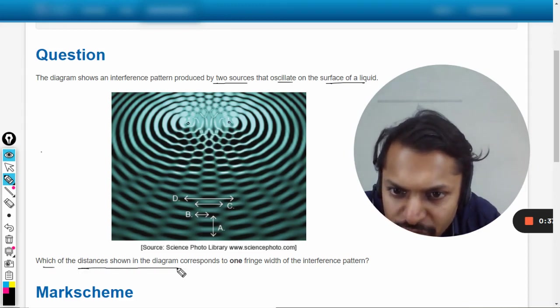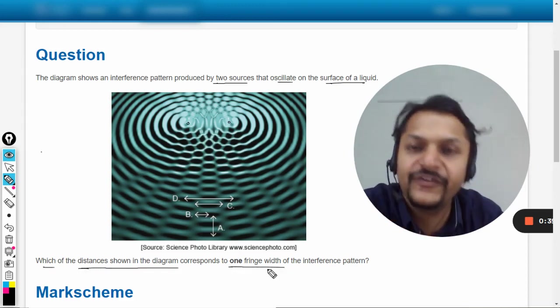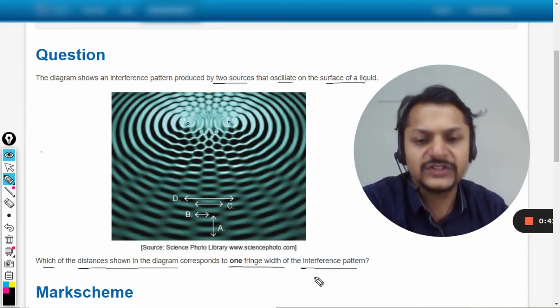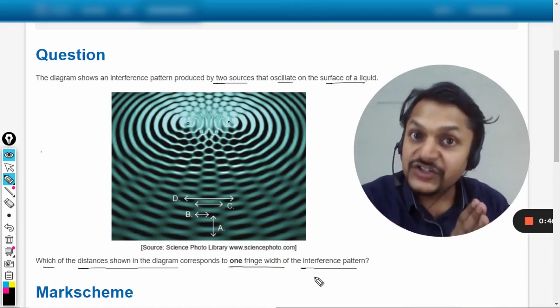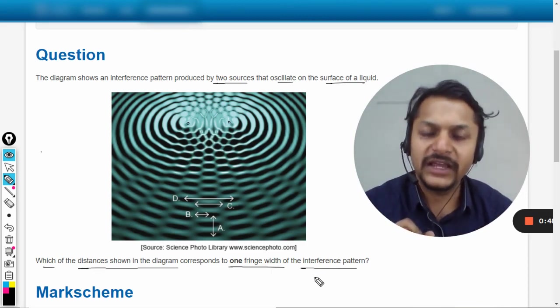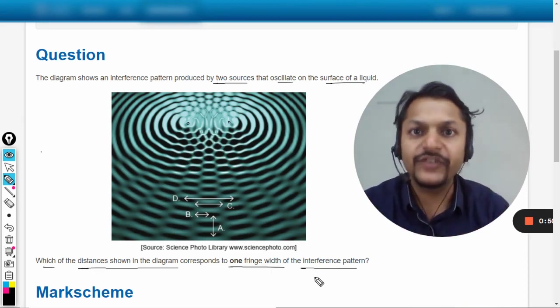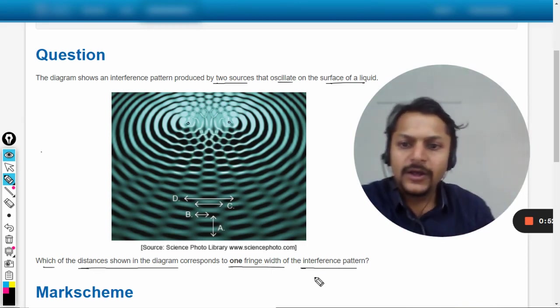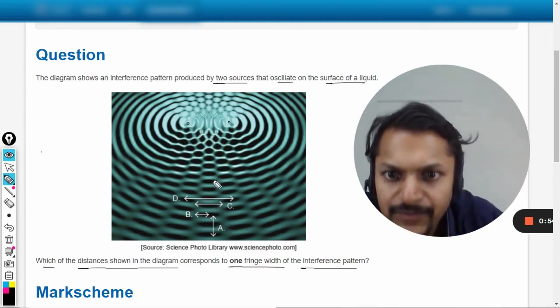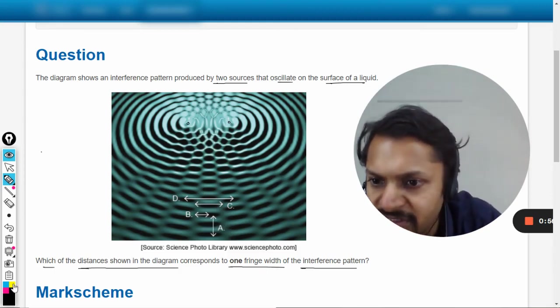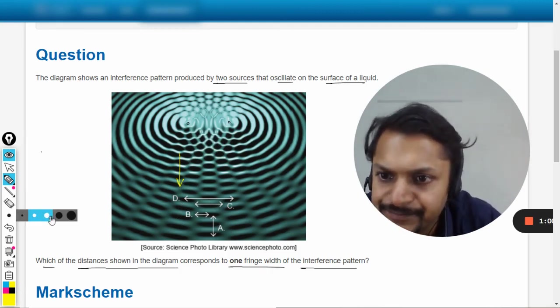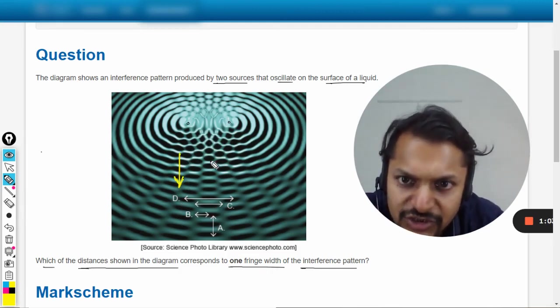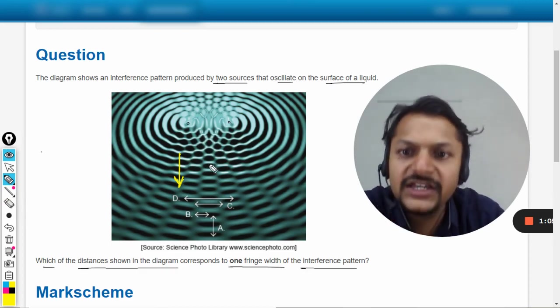Which of the distances shown in the diagram corresponds to one fringe width of the interference pattern? Either you call it fringe width or fringe spacing, it's the same thing - fringe spacing equals fringe width. The disturbance is coming from this point to this in the downward direction.